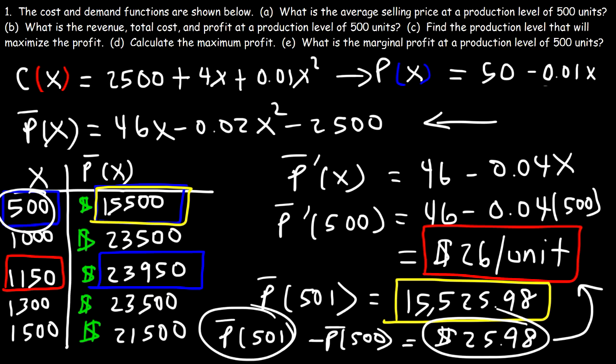The same interpretation applies to marginal revenue and marginal cost. Marginal revenue tells you the change in revenue if you sell one more unit. Marginal cost tells you the change in total cost if you sell one additional unit. Hopefully that gives you a good understanding of the meaning behind marginal profit, marginal revenue, and marginal cost.